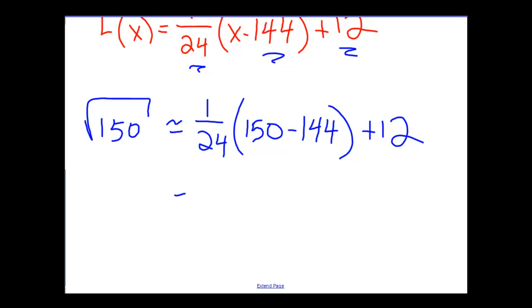To do that, we're going to figure out what this expression looks like. We have 1 over 24, 150 minus 144 is 6 plus 12. 6 over 24 is 1 fourth, so this is approximately 1 fourth plus 12, which is equal to 12.25.